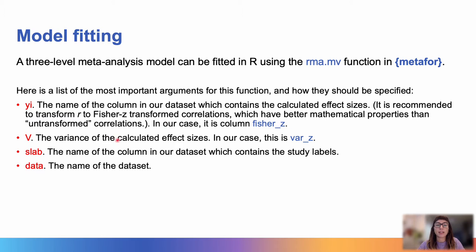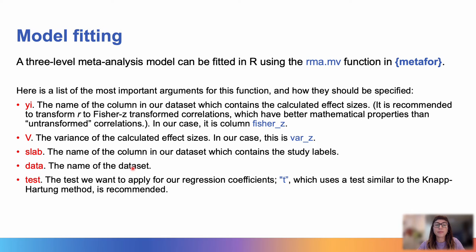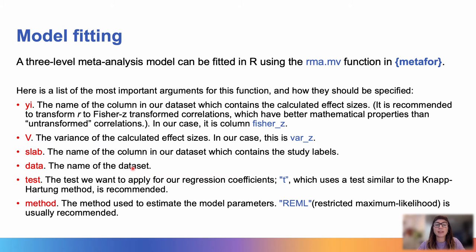We then need the variance, the calculated effect sizes, the study labels, and also the name of the dataset. Then we need the test that we want to apply for our regression coefficients, and the method used to estimate the model parameters. Just a note to say that this is a matter of choice and I do recommend to check the options that are available and to choose what is best for you and your own data.